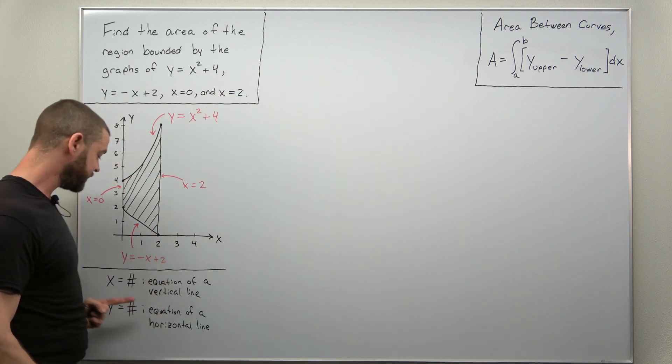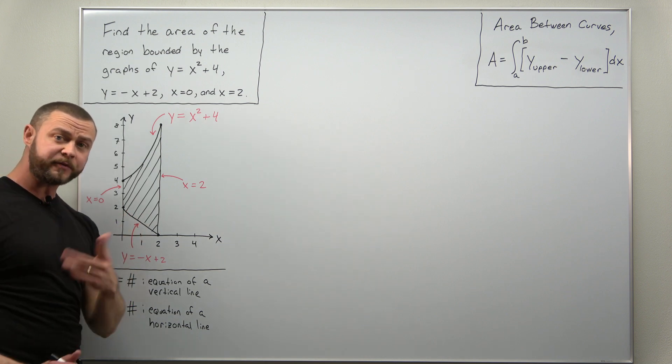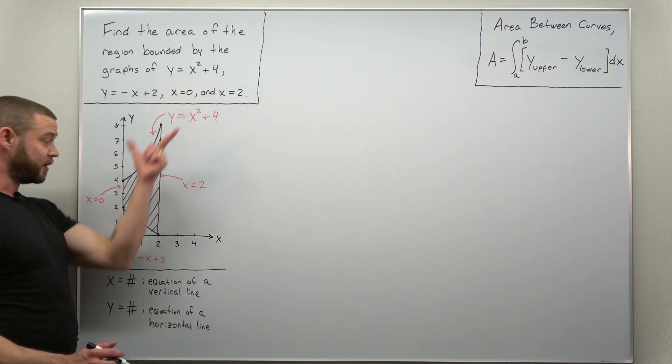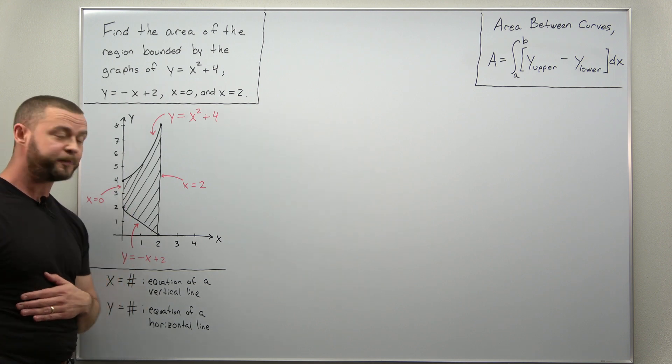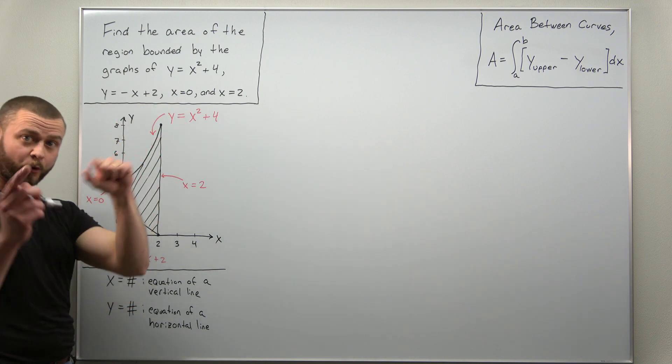Those are also straight lines, equations of vertical lines. So as long as you're on top of your algebra, taking the problem and then sketching the region should be pretty simple. So here's the sketch of the region bounded by those four curves.